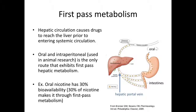First-pass metabolism occurs when drugs go through the hepatic circulation prior to entering the systemic circulation. Oral drugs are absorbed from the intestines and reach the liver through the hepatic portal vein. The liver then breaks down the drug using many different types of enzymes. The drug and its metabolites then enter the systemic circulation.